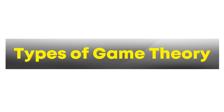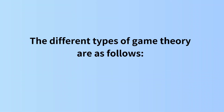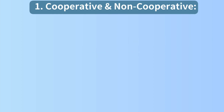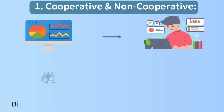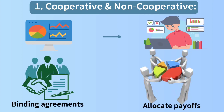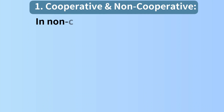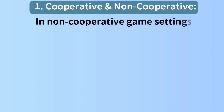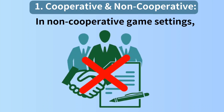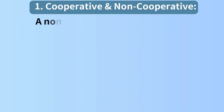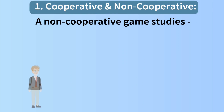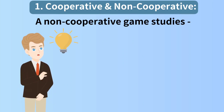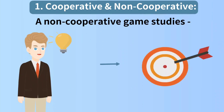Types of game theory. The different types of game theory are as follows. First, cooperative and non-cooperative. This analysis involves studying how players form binding agreements and allocate payoffs between themselves. In non-cooperative game settings, players cannot get into binding agreements. A non-cooperative game studies how rational individual players decide their strategy to fulfill their objectives.